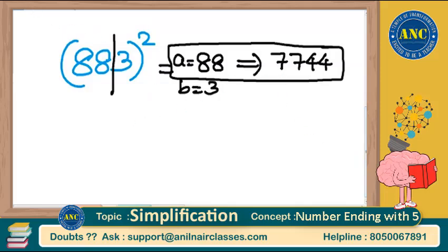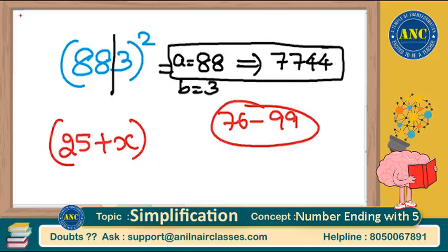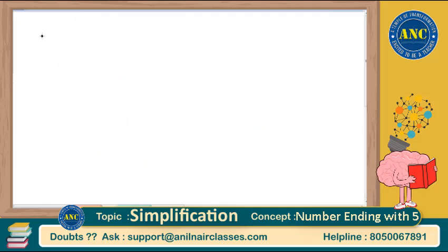So 88 square you know as 7744, and 3 square you know as 9. You can apply the (a+b) whole square formula. There are multiple methodologies — you can apply this concept from 76 to 99 also. I am just splitting to make it very easy for you. Now listen to the next concept very very carefully.